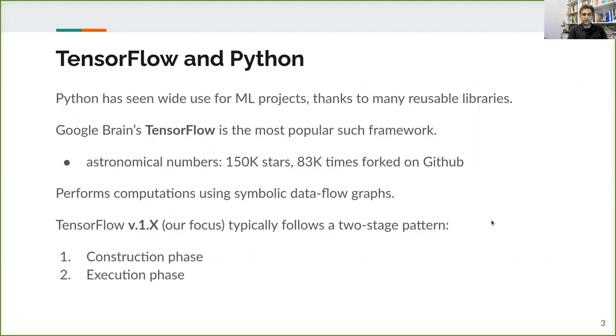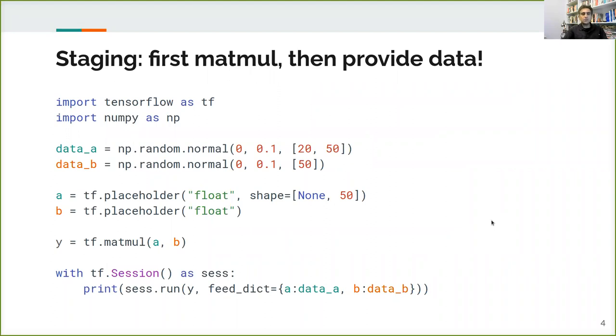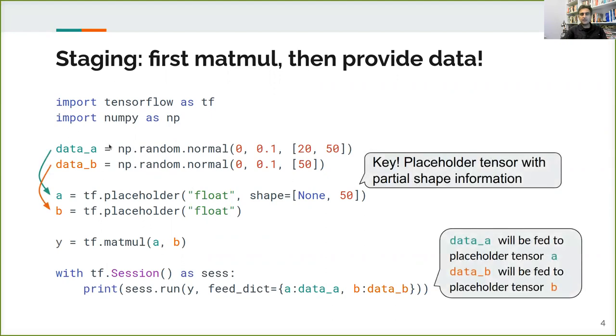The two-stage pattern means that there's first a pipeline construction and then a pipeline population with data and execution. Let's illustrate this with a small example. We see a small Python program here and after some preliminaries we see two data sets that will be defined and then the important elements for our analysis. We see the definition of two placeholder tensors. Now note that despite the association shown here, at this point in the program, the runtime data have not been associated with placeholder tensors.